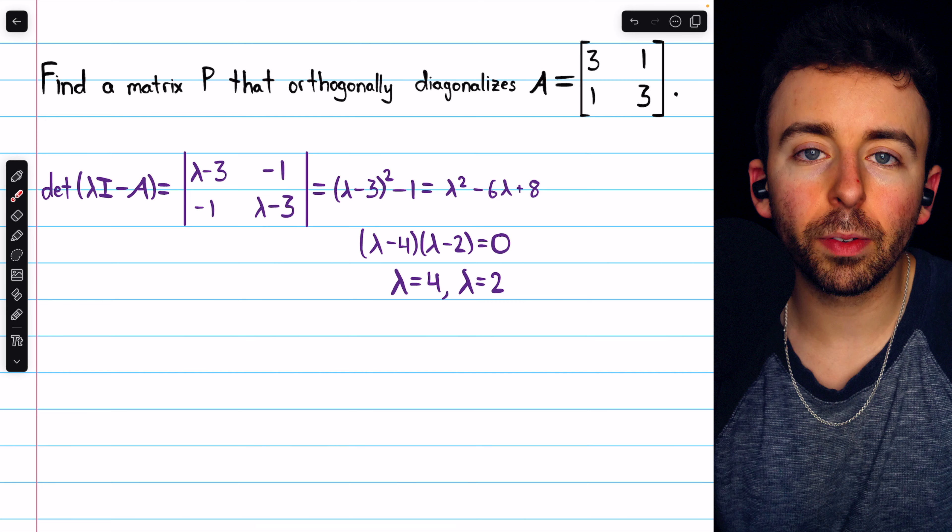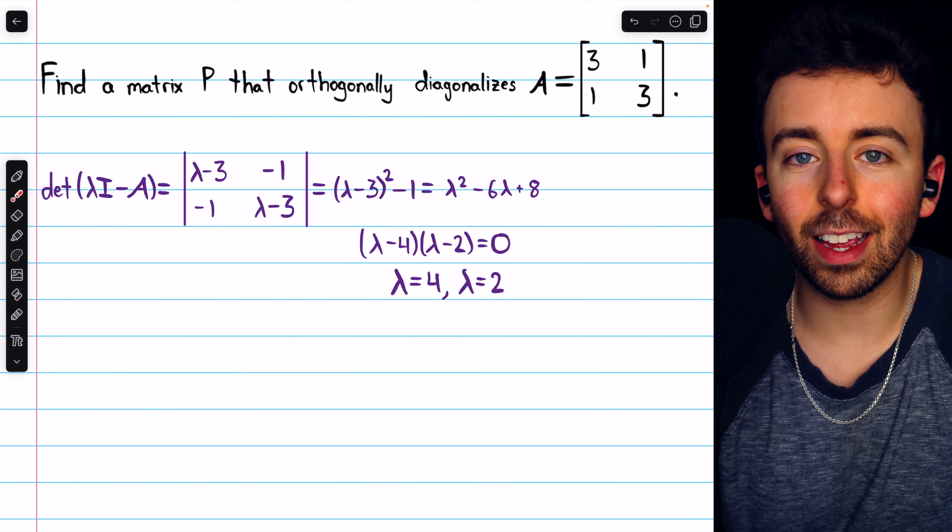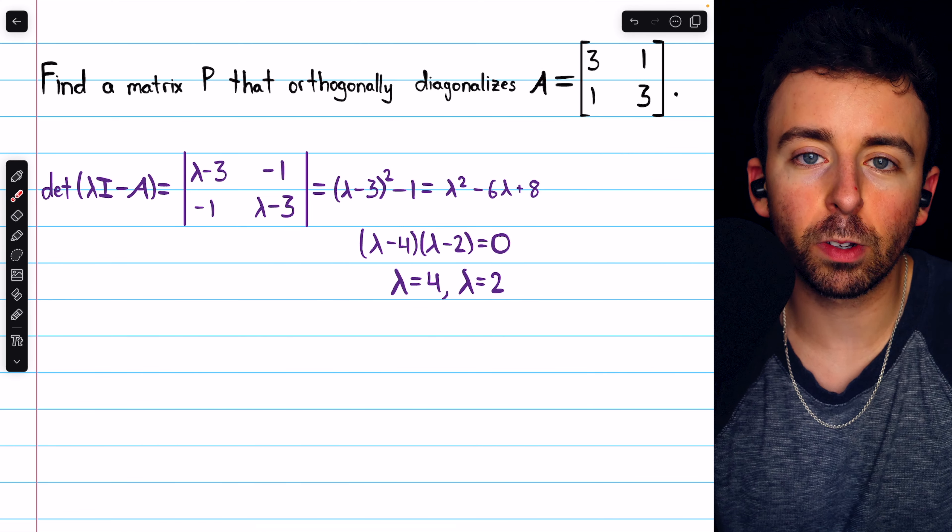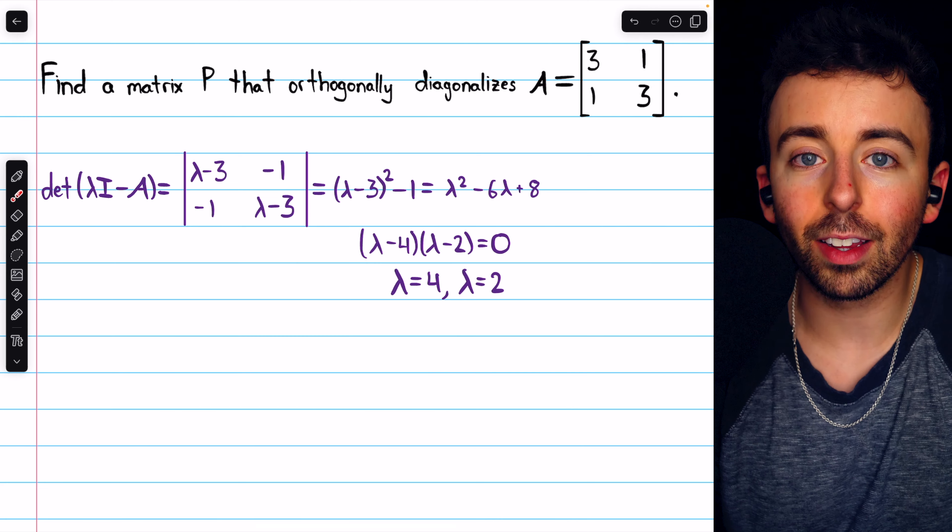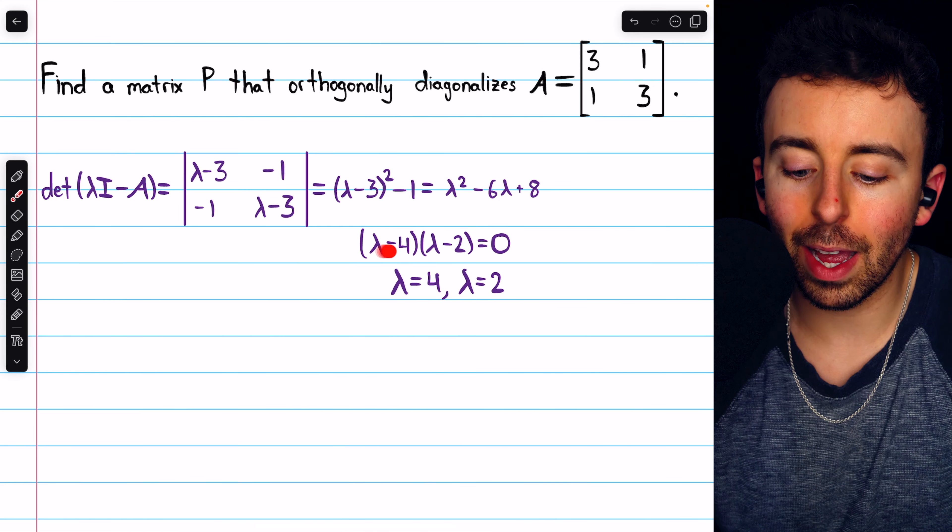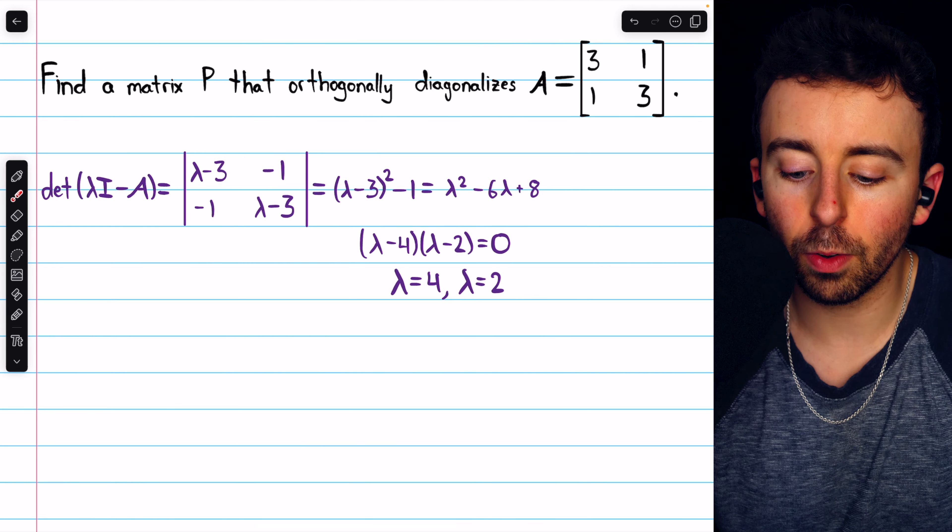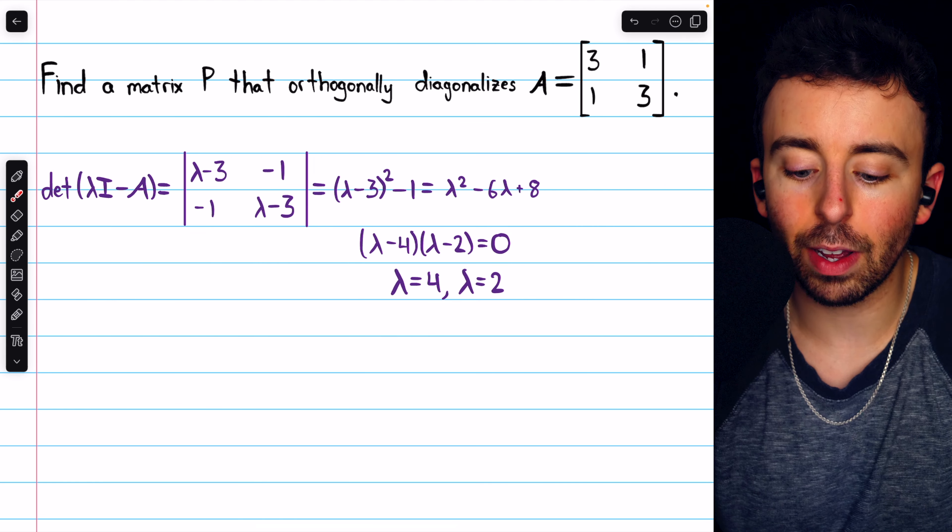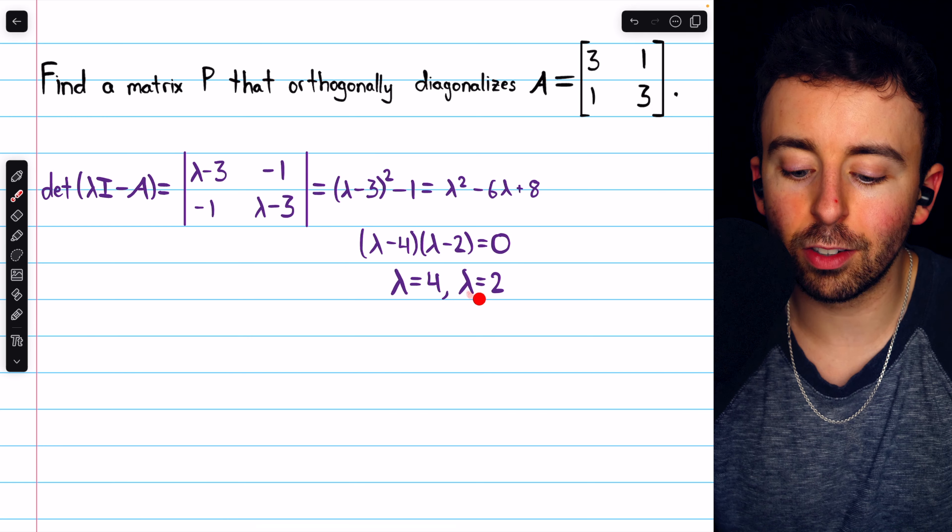That's the characteristic polynomial, and we can factor it and set it equal to 0 to get the characteristic equation whose solutions are the eigenvalues. We can factor this as lambda minus 4 times lambda minus 2, set this equal to 0, and we find the eigenvalues are 4 and 2.